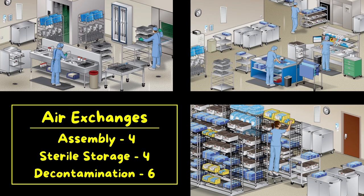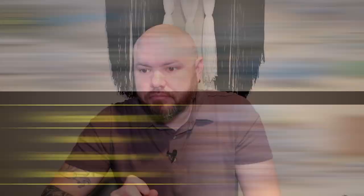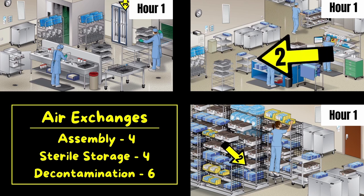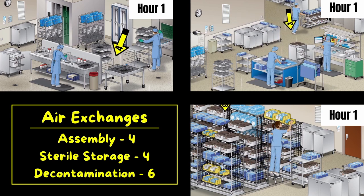Now that we've seen a balanced room, a positive room, and a negative room, I want to put the entire department together so you can see in real time how everything works. The graphic shows decontam, assembly, and sterile storage — with sterile storage being the only one with an exit door, to help illustrate how air moves through each area. All areas are performing their air exchanges: clean areas get four supplied and three returned; decontam gets six supplied and seven returned.